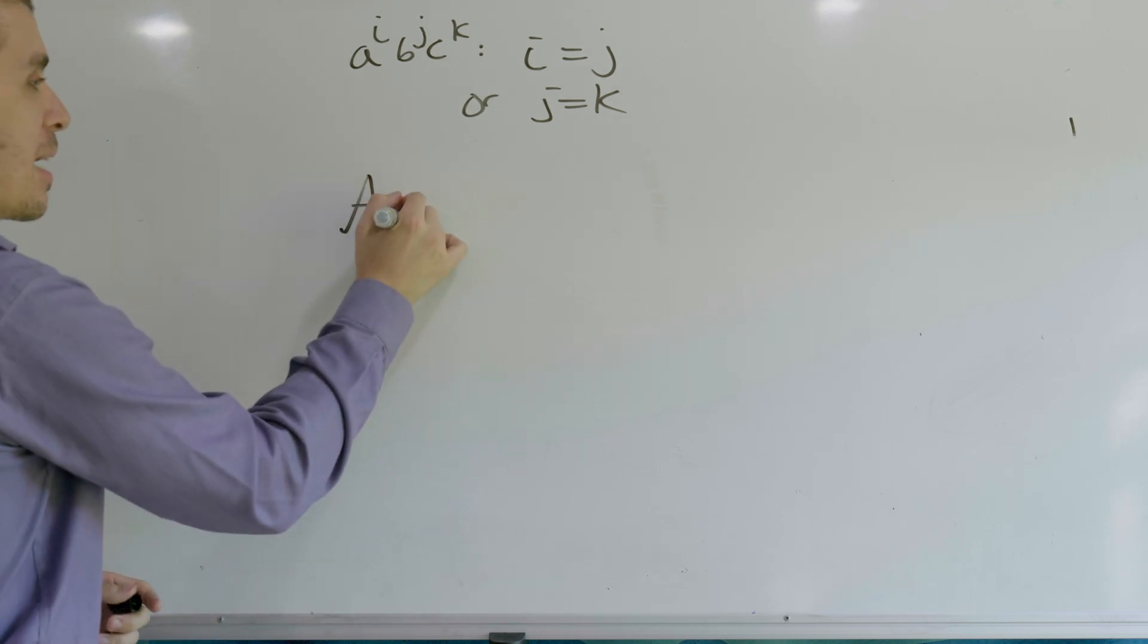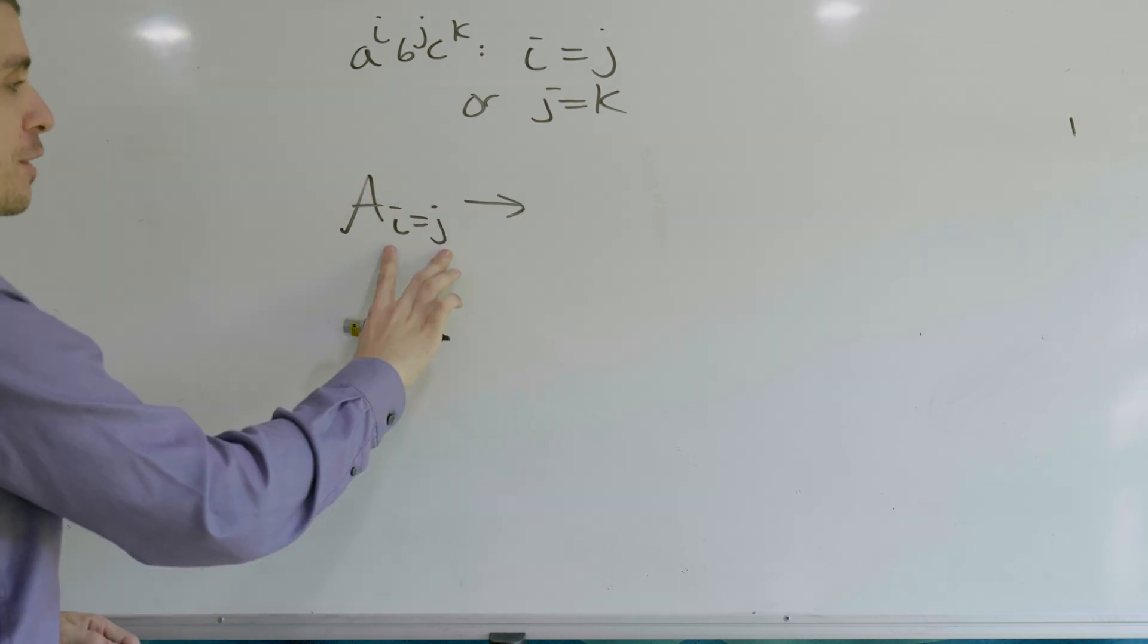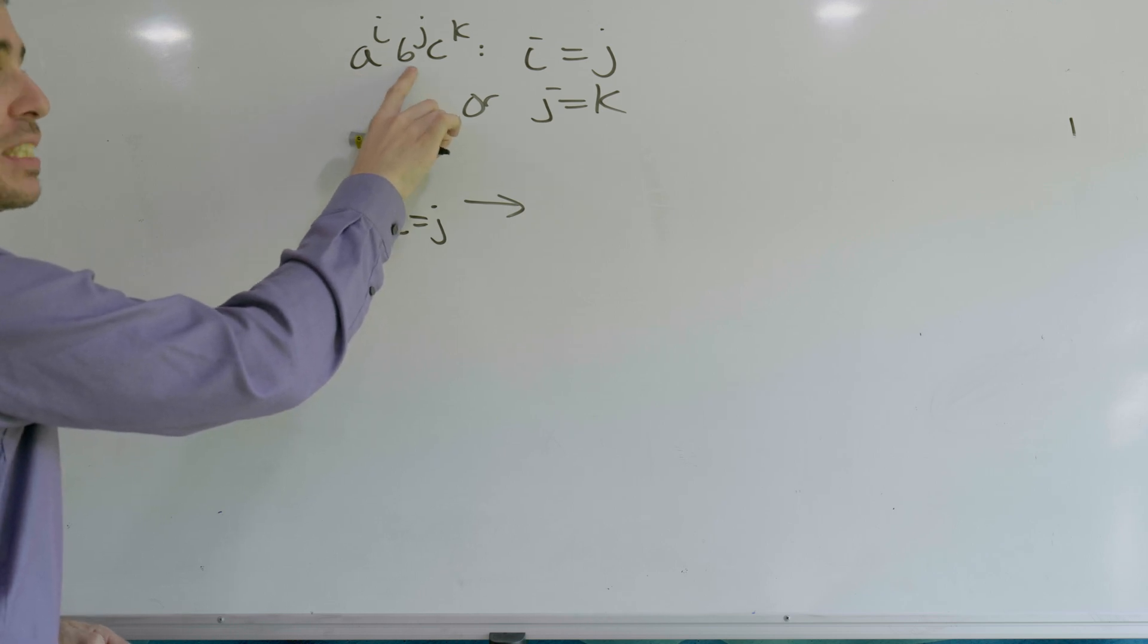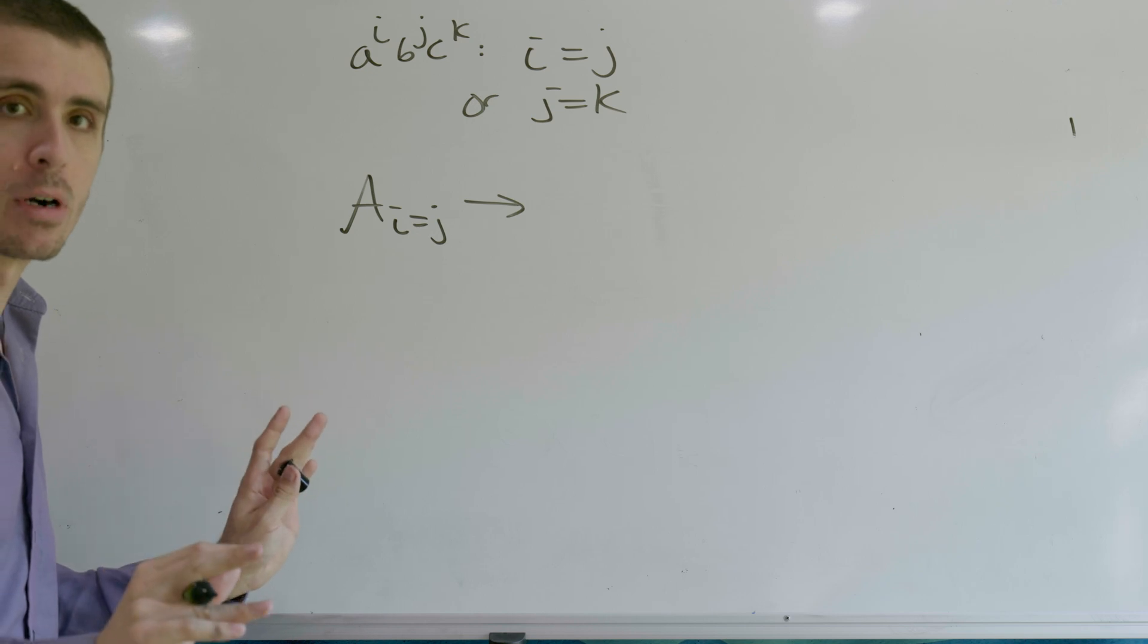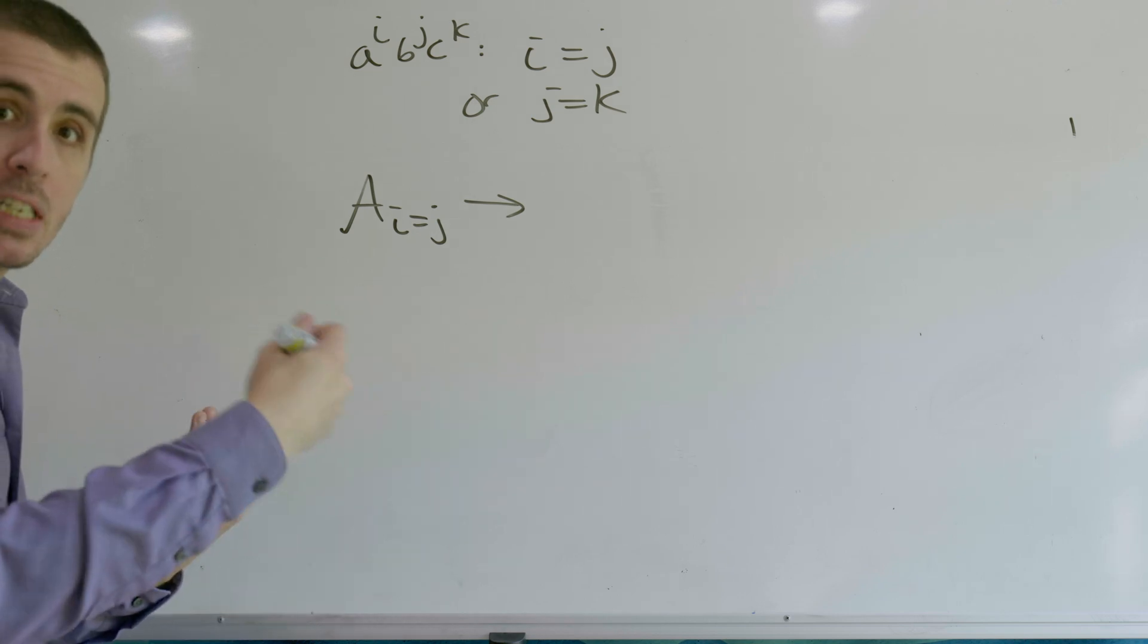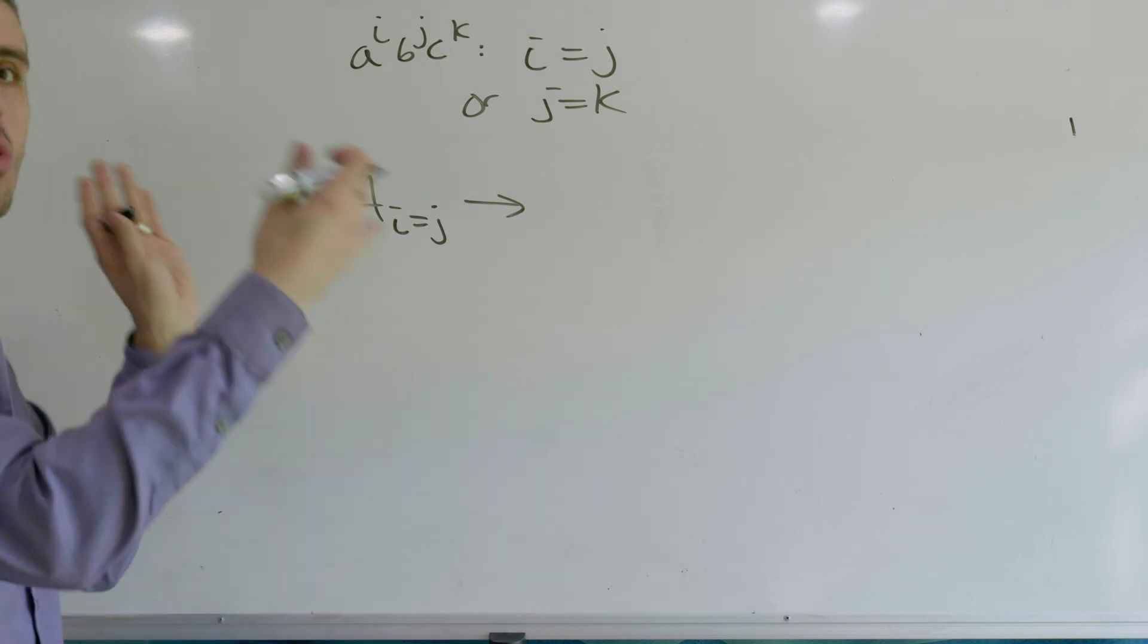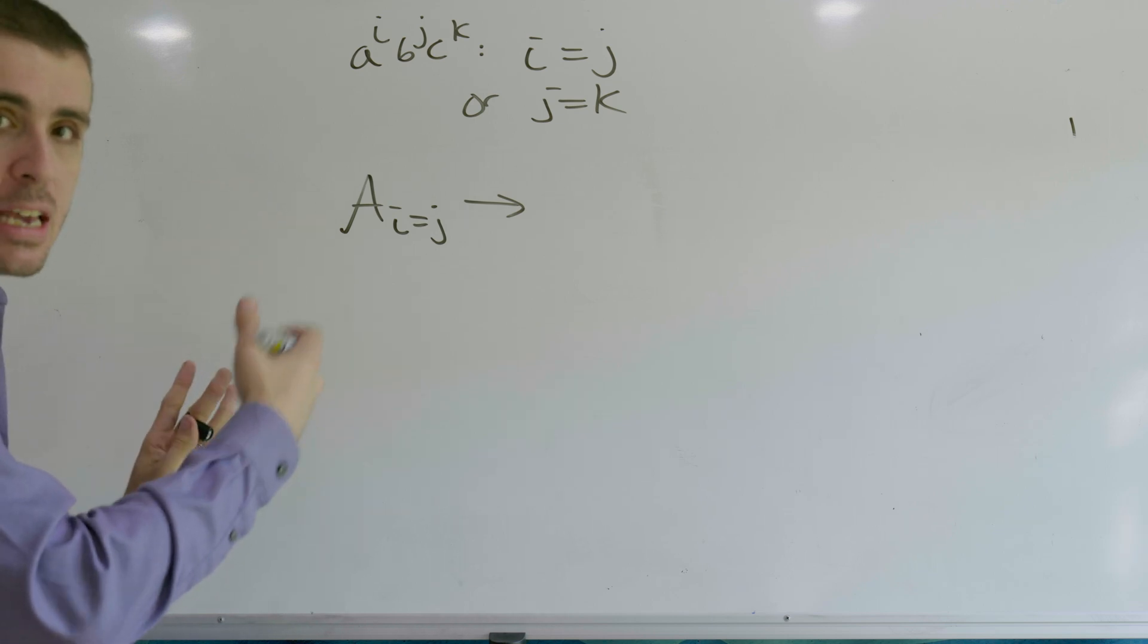So let's make a variable A_i=j. This variable is going to handle when the number of A's equals the number of B's. Notice here that the number of C's for this does not matter at all. So we need to spout off as many C's as we need to before we tackle the actual problem of equal A, equal B.